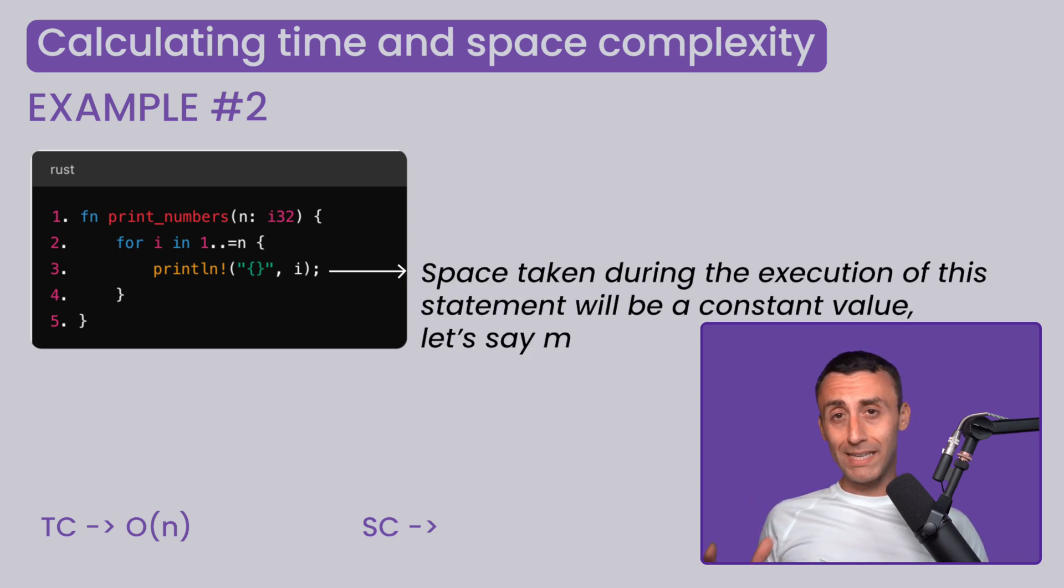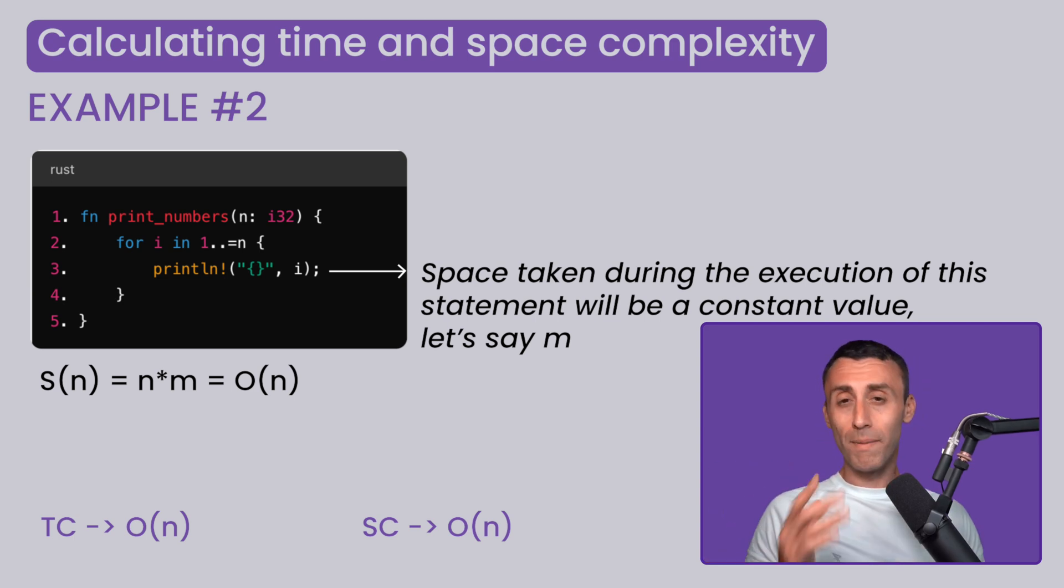And the same goes for the space complexity. The space taken during the execution of the print statement will be a constant value. Let's say M. Applying a similar logic here, since the print statement will be executed n number of times, the overall space complexity is going to be S of n equal M times n, which in big O notation is again going to be S of n equal big O of n. Before we close this, let's take one final example, and this is going to be a bit more complex.